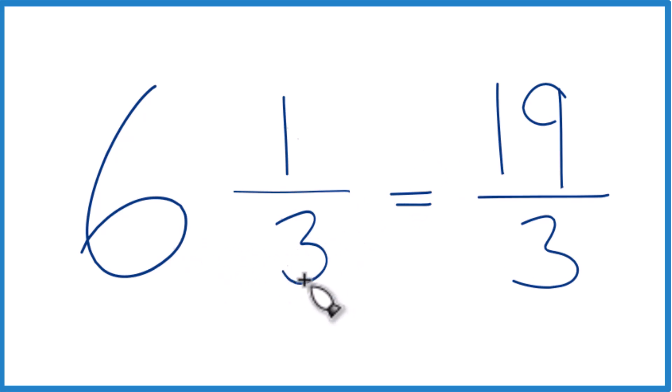Six times three, that's 18. 18 plus one, that's the numerator, 19. Three, bring that across, you got it.